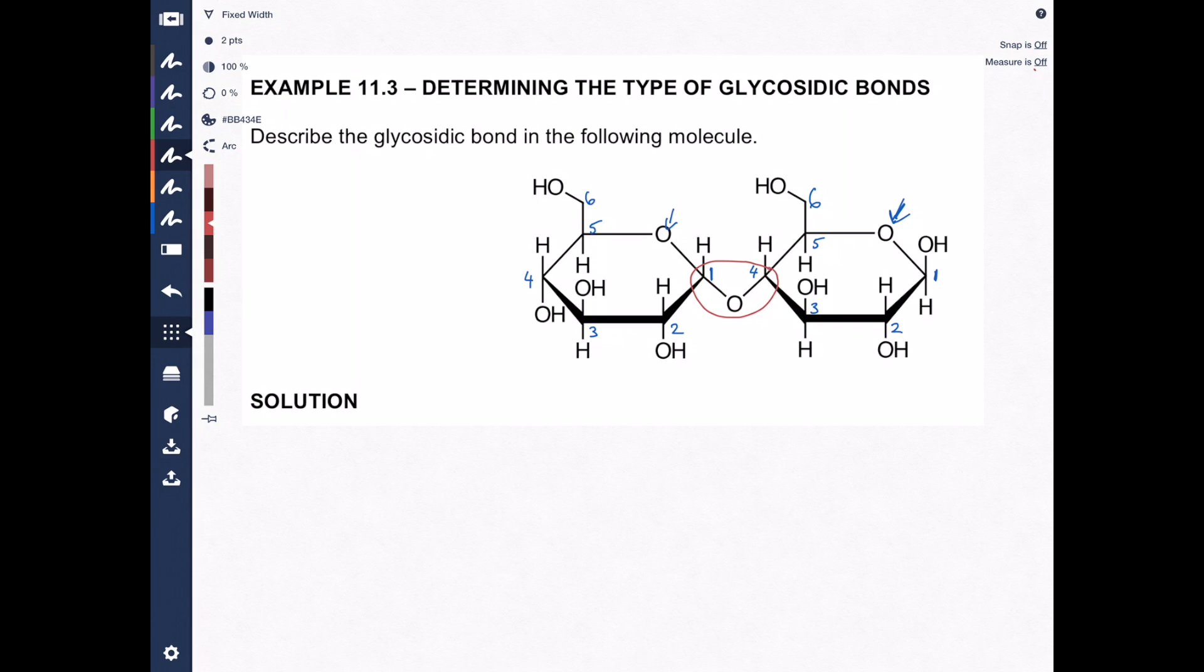It encompasses the carbon number 1, the oxygen, and carbon number 4 of the other sugar ring. So that is the glycosidic bond. A lot of people describe it as an ether that connects two sugar molecules. It's not exactly an ether, but it's close enough for this class. So we'll call it an oxygen that connects sugar molecules through an oxygen.